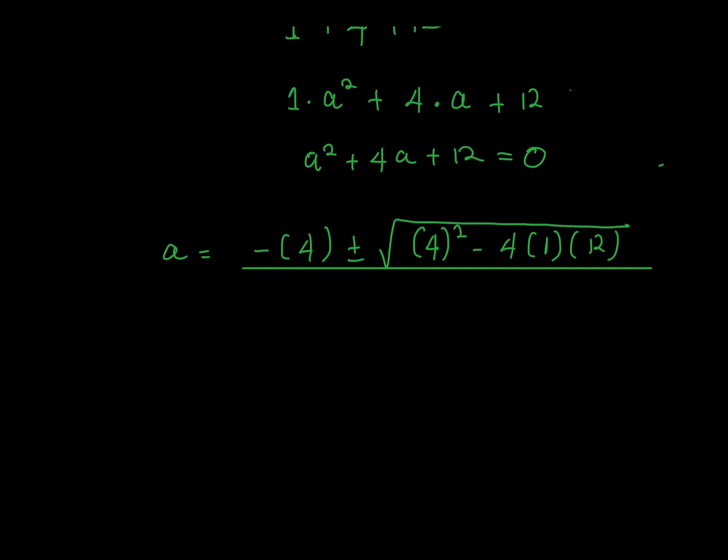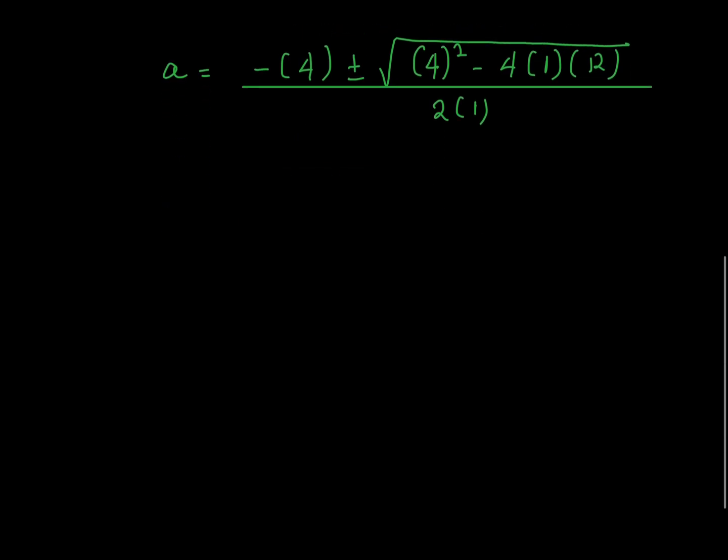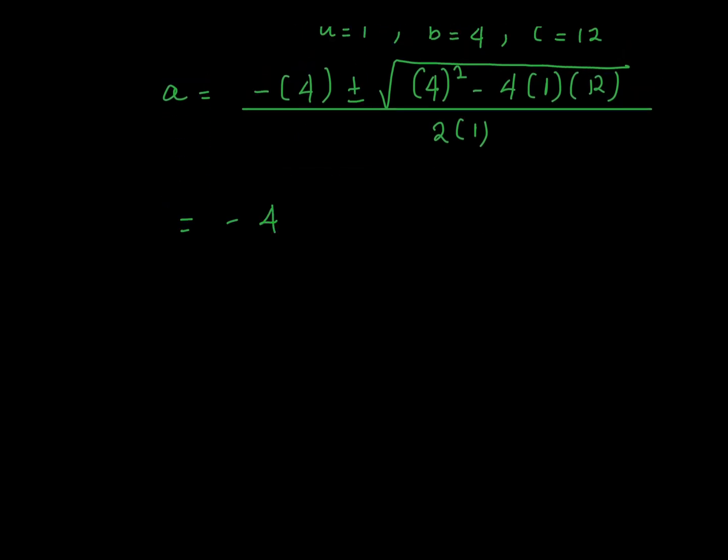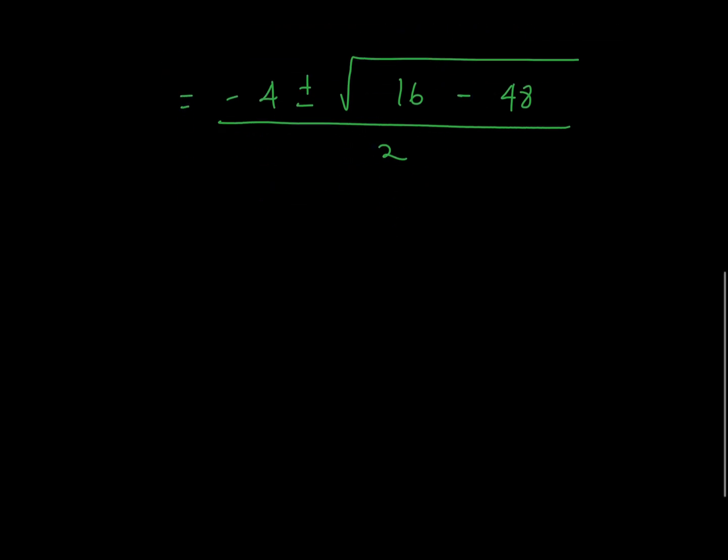So we have (-4 ± √(4² - 4·1·12))/(2·1). If we solve this, we'll have 16 minus 48. Just notice that 16 minus 48 is just -32.